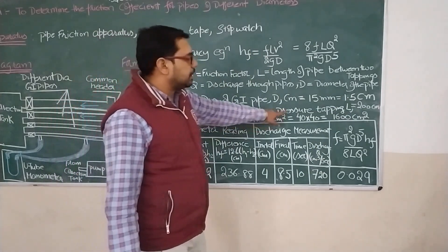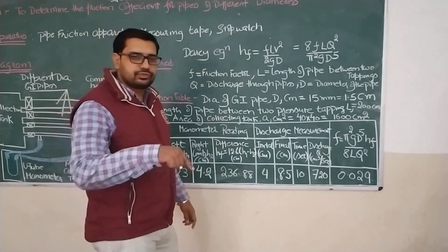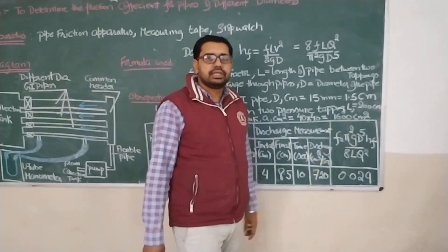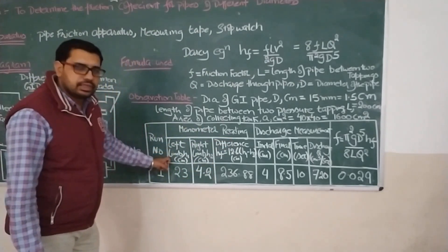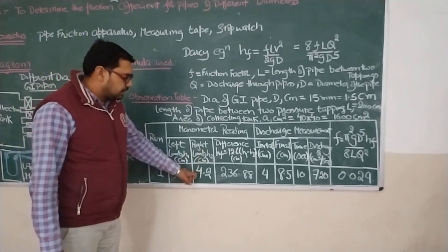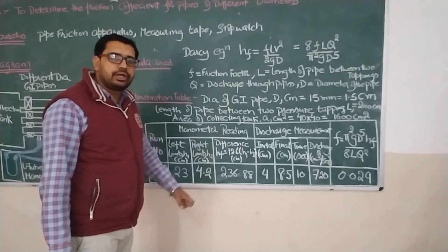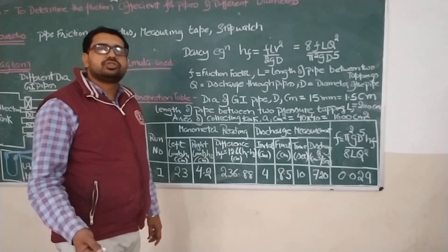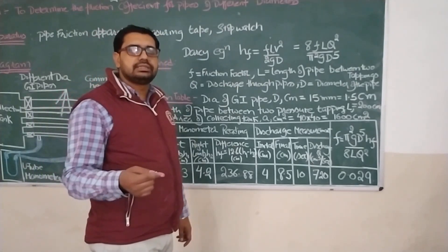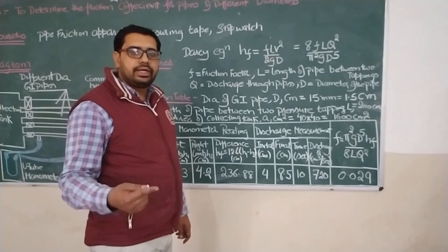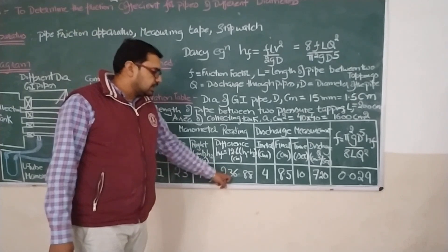The length of the pipe between the two pressure tappings is 200 cm. The area of the collection tank is 40 by 40, which comes out to be 1600 cm². The left limb of the manometer is 23 cm and the right limb is 4.2 cm. The difference in both heads is 23 minus 4.2, which equals 18.8 cm of mercury. To convert to equivalent water head, we multiply by the ratio of densities — mercury to water — which is 12.6. So 18.8 multiplied by 12.6 gives 236.88 cm of water.